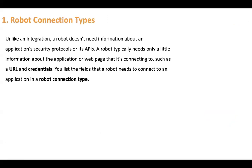You can consider a connection type like a template which helps you gather what information you require to access the application. Unlike an integration, a robot does not need any information about an application's security protocol or its API. When you create a connection using an adapter you have to provide API details, security details, connectivity agent, and all that — but a connection type is like a template that helps you add the parameters required to access the application. A robot typically needs only a little information, such as a URL and its credentials.